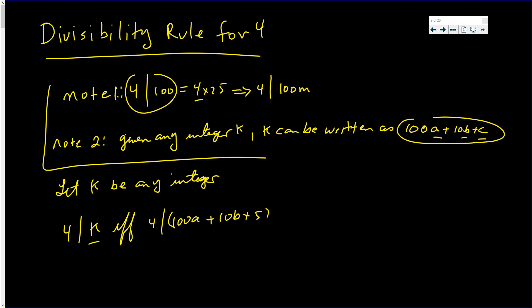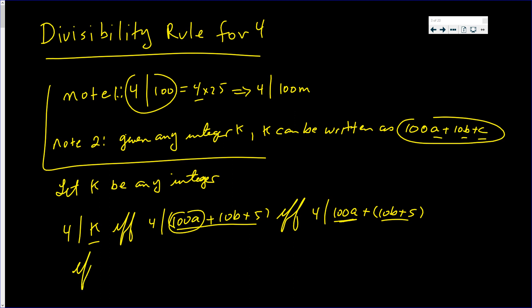So four divides k only if four divides that number. But we know four divides the hundred-a term. And whenever we like, we can think of a sum as one number. Since four divides that hundred-a term, the only way four is going to divide the sum is if and only if four divides ten b plus c.